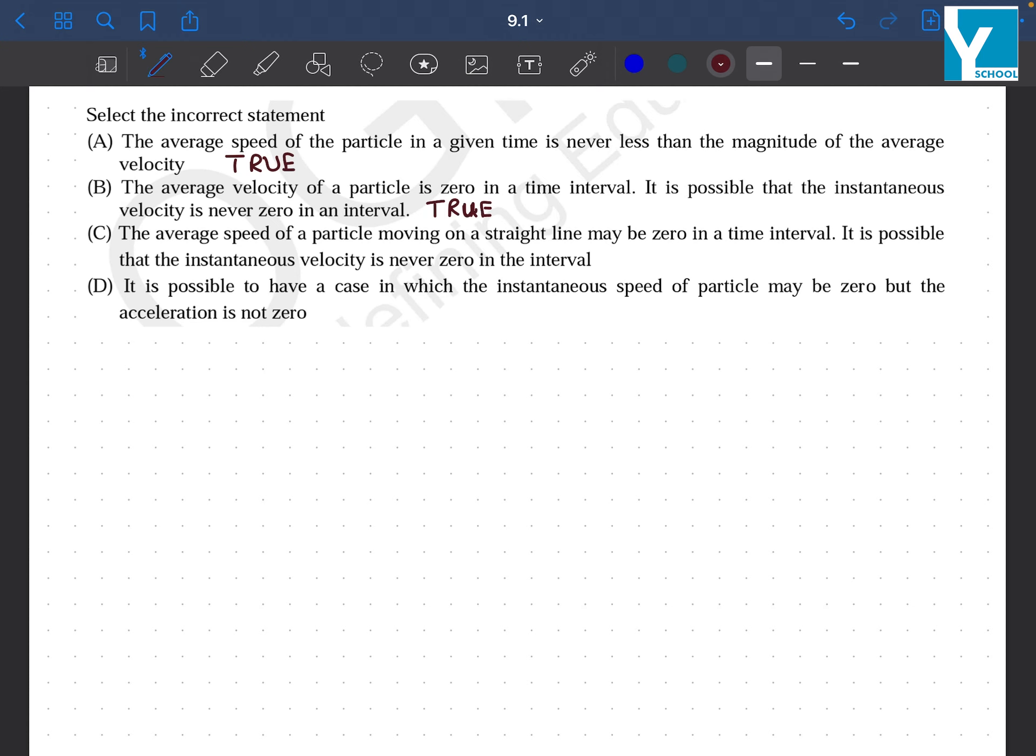Average speed of a particle moving on a straight line may be zero in a time interval. It is possible that instantaneous velocity is never zero in time. That is definitely false. If velocity has some value, speed will also have some value.